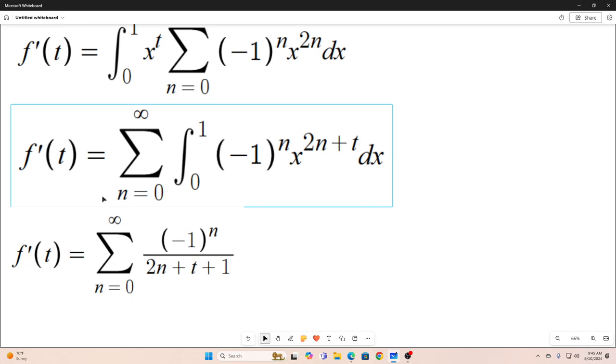And if you work this out, this is what you get. You just evaluate. Well, first you would bring out this negative 1 to the n. And then you would evaluate this integral right here. And this is what you end up with. So, we have our f prime of t is equal to that.